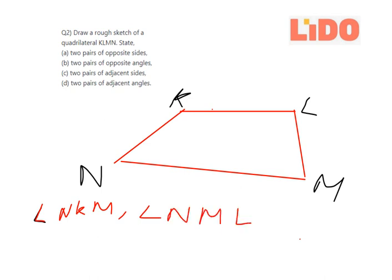Okay, and then second pair can be angle KNM and angle KLM. Okay, let's move on to the third question now, part C.